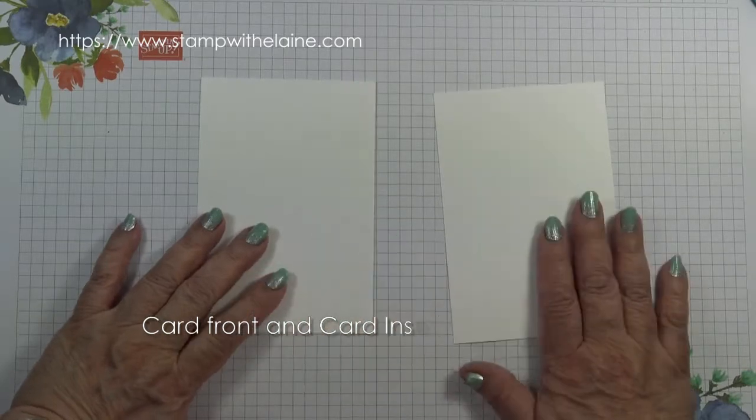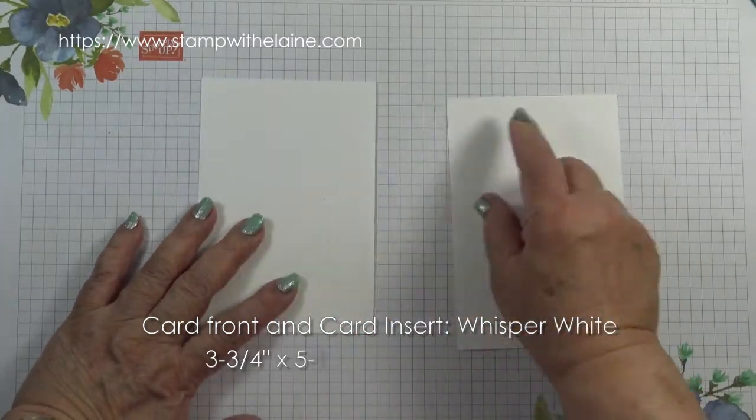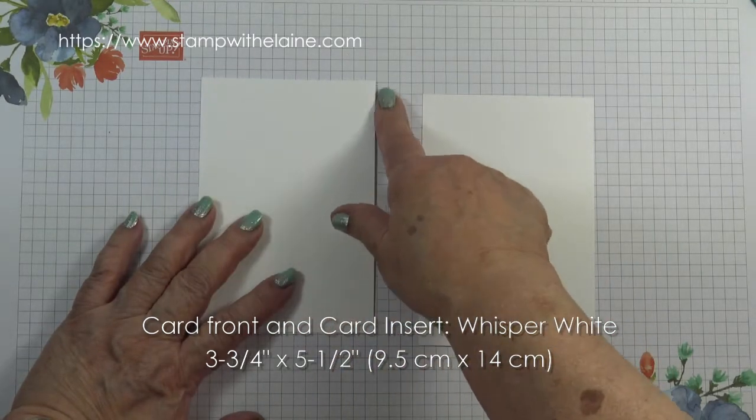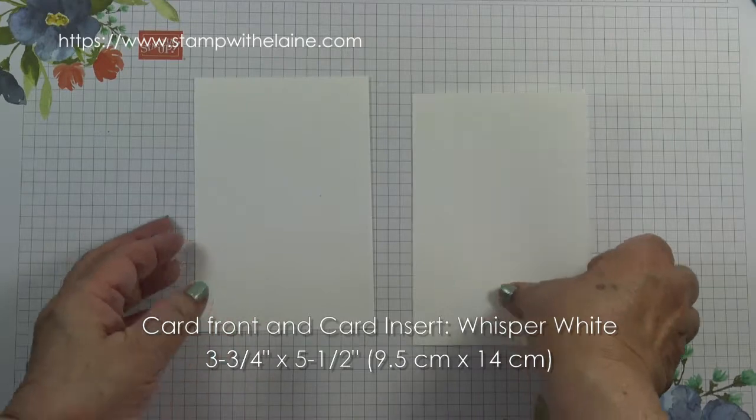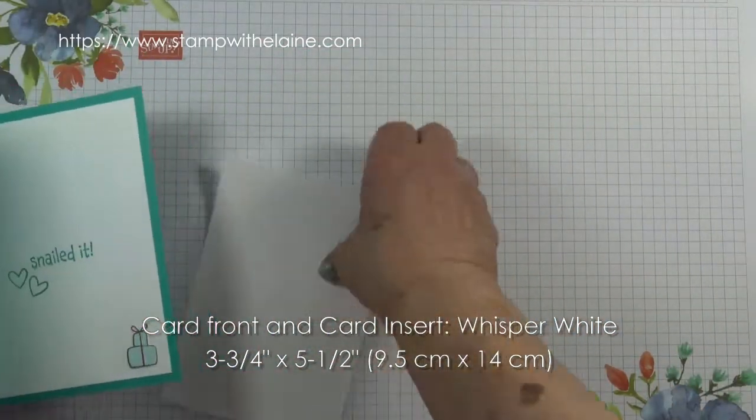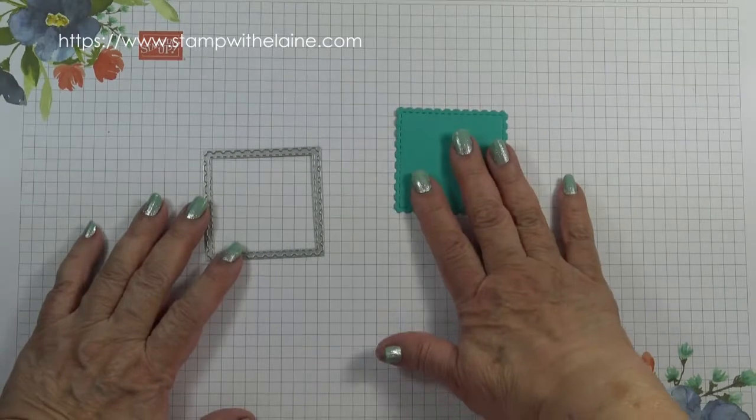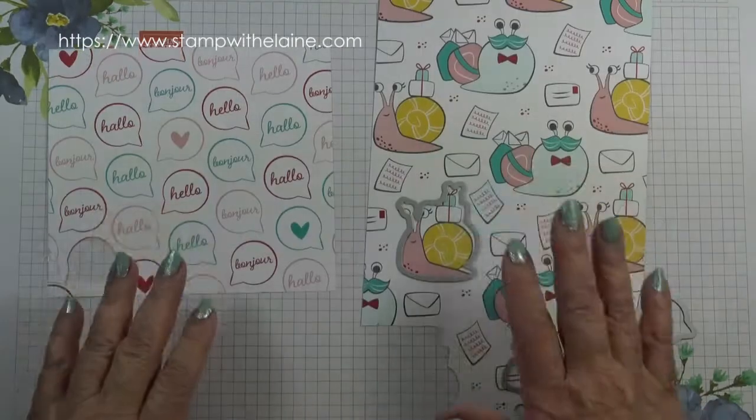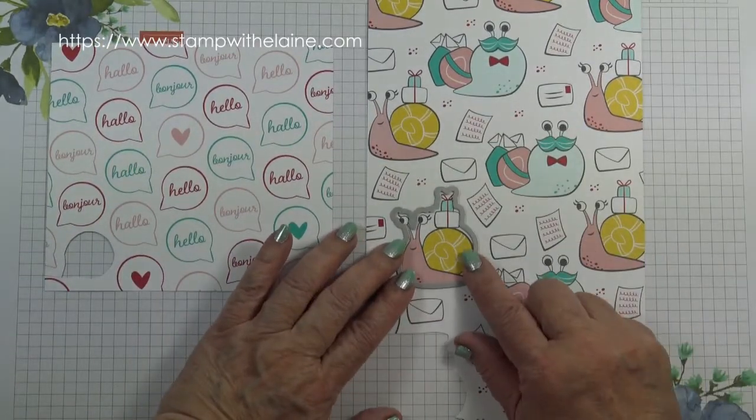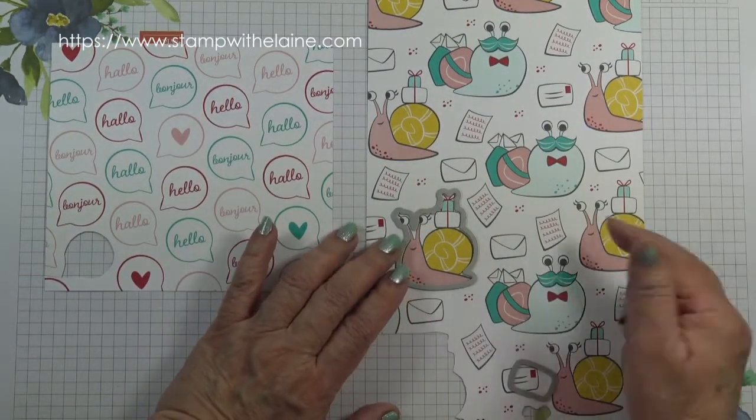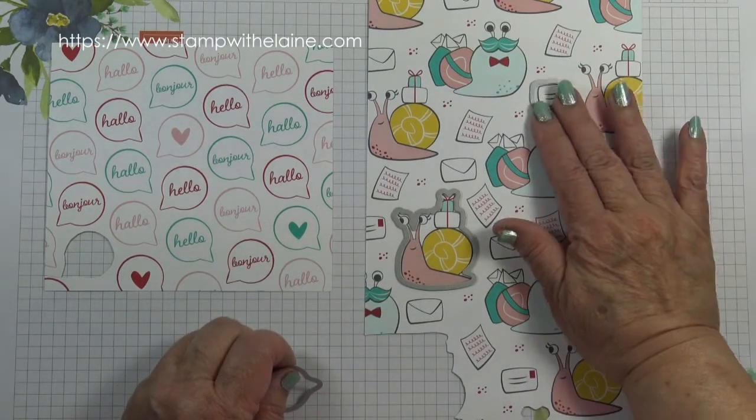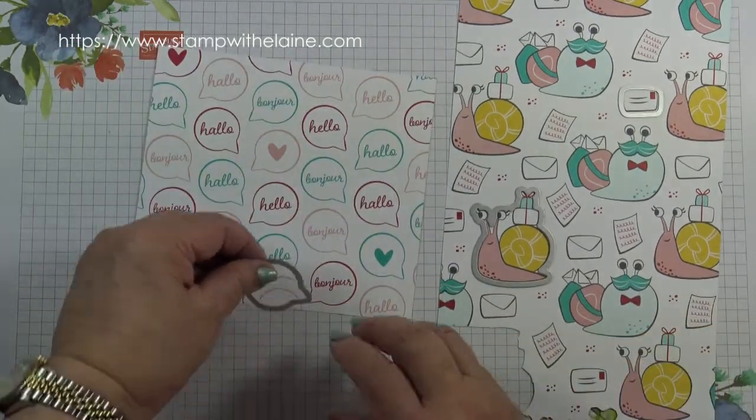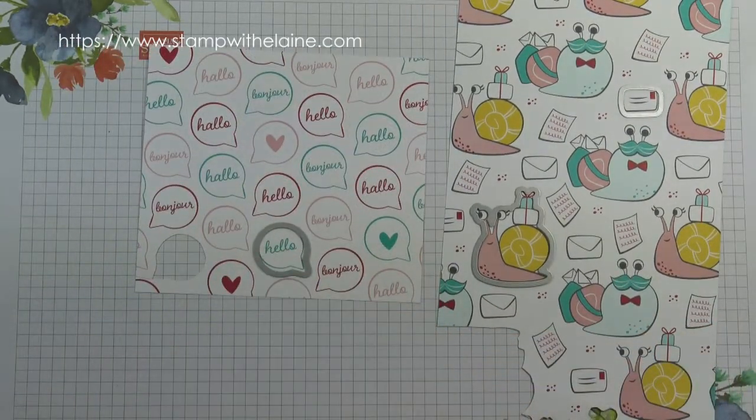These have been cut at three and three quarter inches by five and a half inches, in metric that's 9.5 by 14 centimeters. One for the outside and one for the inside. You need a scrap of Bermuda Bay to die cut this large postage stamp and from this sheet of designer series paper you need to cut out one of the snails and a stamped envelope and from this sheet of paper die cut a hello speech bubble.